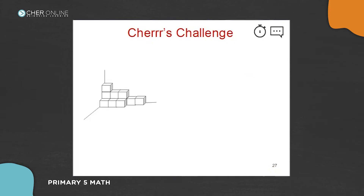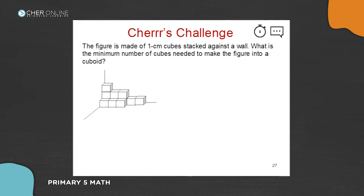Let's check out this challenge. The challenge simply means there are some extra steps and extra things to think about — it doesn't mean it's very difficult. The figure is made out of one centimeter cubes stacked against a wall. What is the minimum number of cubes needed to make the figure into a cuboid — a proper solid with a length, breadth, and height?